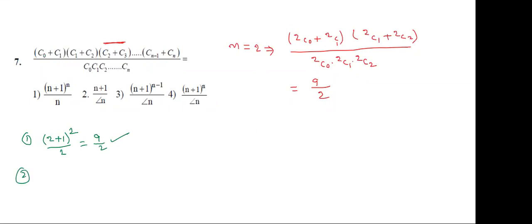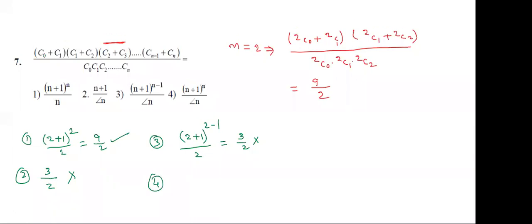Second option: (2+1) = 3, 3 divided by 2 factorial — 2 factorial means 2 — gives 3/2 by 2. Now comparing, the first and fourth options coincide. Then what we have to do?